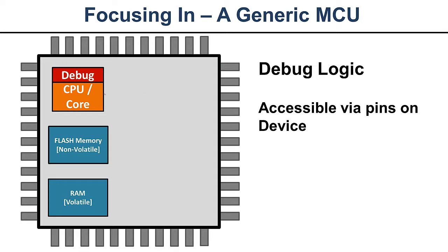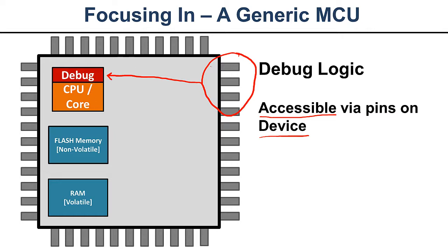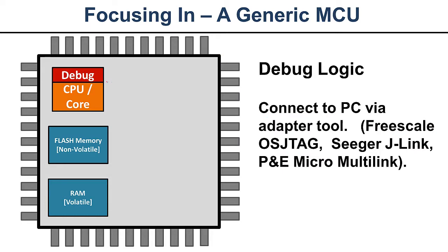The debug unit — which I have drawn here attached to the core — may be integrated with the core or may be a separate peripheral depending on the architecture. More and more microcontrollers tightly integrate it for fancier features. The debug logic almost always has some sort of interface available on the pins of the device. To command the debug logic, you connect to a PC via some sort of adapter tool — for example, Freescale has open-source JTAG, you can buy a J-Link from Segger, or P&E Micro makes adapters for Freescale devices.